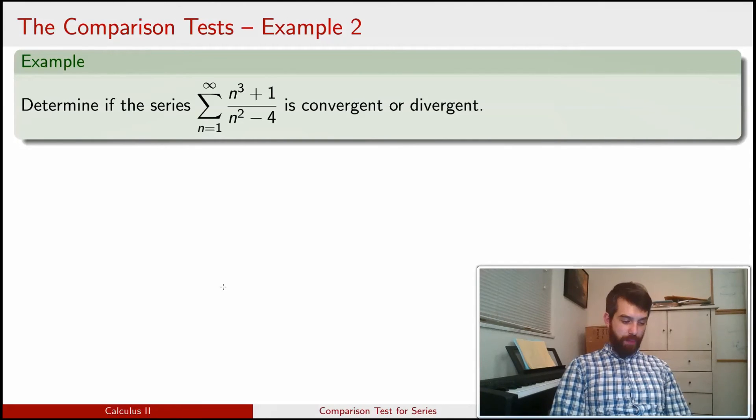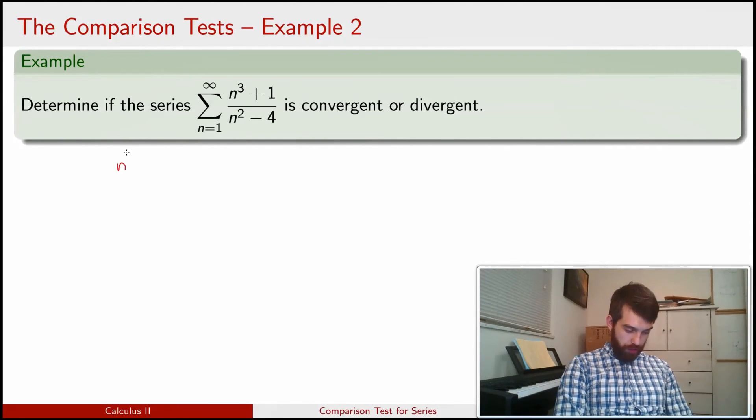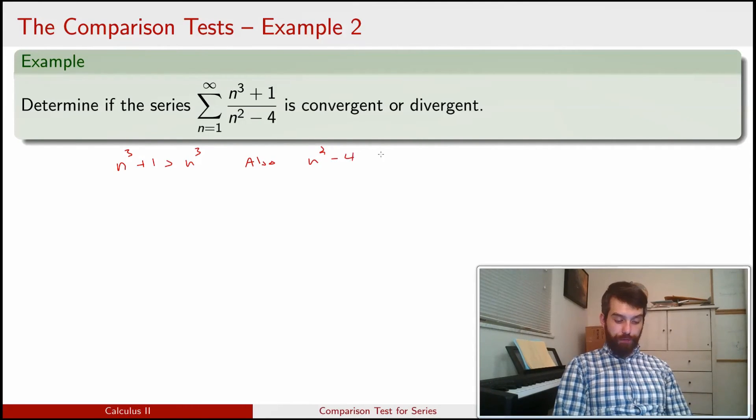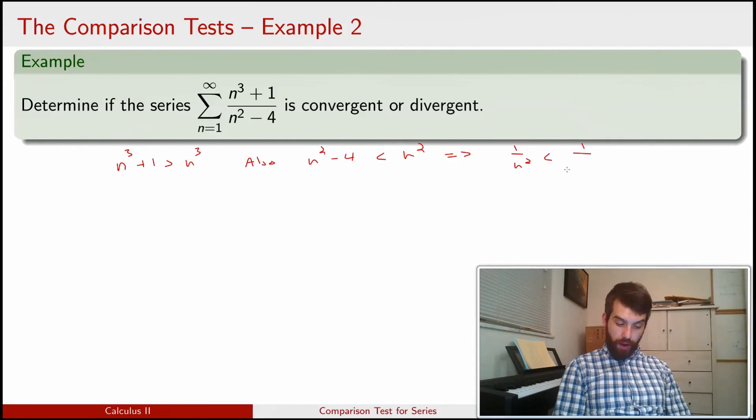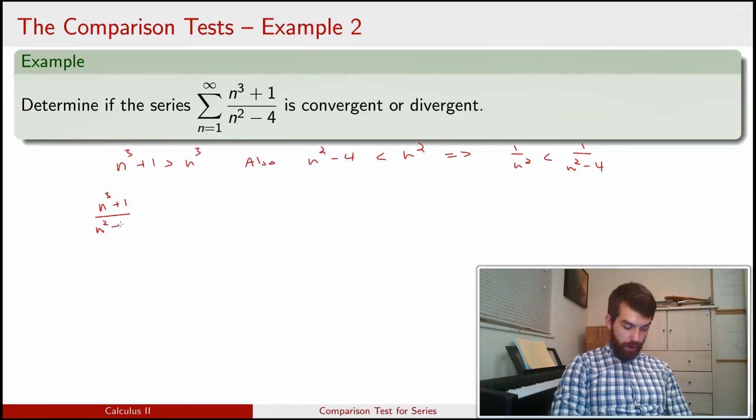A little bit more complicated of an example. I'll begin with two things that I know for sure. n cubed plus 1 is for sure bigger than n cubed. And also, if I look at the denominator, n squared minus 4 is for sure less than n squared. The one that's on the denominator, maybe I'll manipulate. I'll say 1 over n squared is going to be less than 1 over n squared minus 4. And then, putting this all together, if I look at the entire thing, the n cubed plus 1 divided by n squared minus 4, both of these inequalities work in the same direction. Both the numerator and the denominator mean that this is going to be greater than n cubed divided by n squared, which is just equal to n.